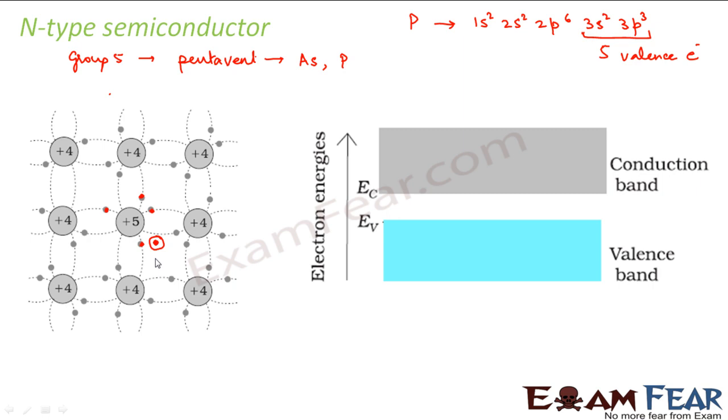But at the same time, the thermal generation will also take place. For example, now if you increase the temperature, what will happen? These extra electrons will come out, that is already there. Other than these extra electrons, the thermally generated electron hole pairs will also be there, which we discussed in intrinsic semiconductor. So that means in that case, both thermally generated electrons and holes will be there as well as these extra electrons will also be there.